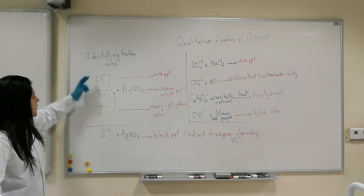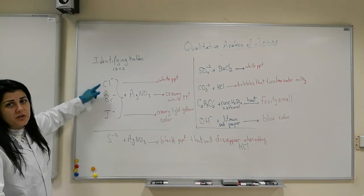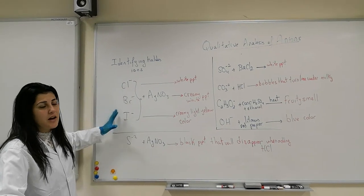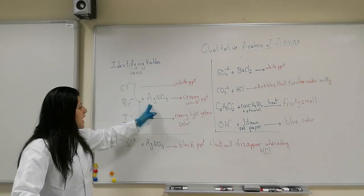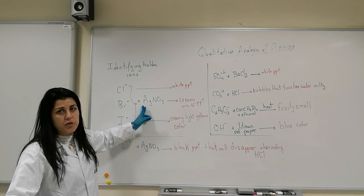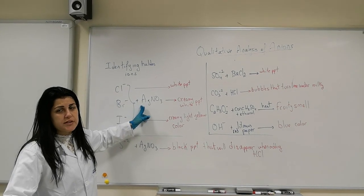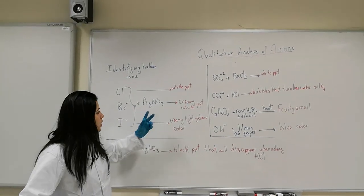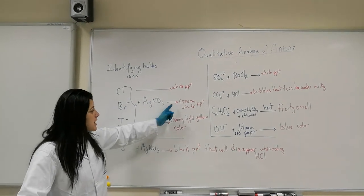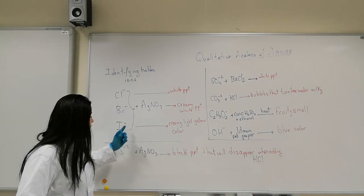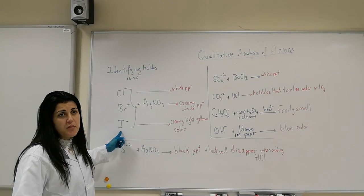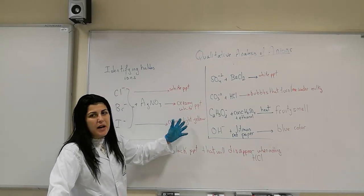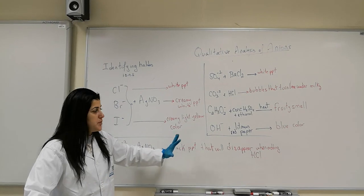I am going to identify the presence of Cl⁻, Br⁻, and I⁻ — these are the halide ions — by adding silver nitrate to those solutions. For the Cl⁻, a white precipitate will be obtained. For the Br⁻, a creamy white precipitate. And for the presence of I⁻, we are going to obtain a creamy light yellow color, not a precipitate.